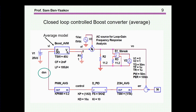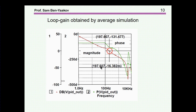Also shown is a way to obtain the loop gain by simulation. We add a junction and inject an AC signal — this is an AC run simulation. The ratio between the voltage at one point and another is the loop gain. We see the loop gain: the brown trace is the gain and the green trace is the phase. The zero dB crossover and the phase at crossover give the phase margin of the system.